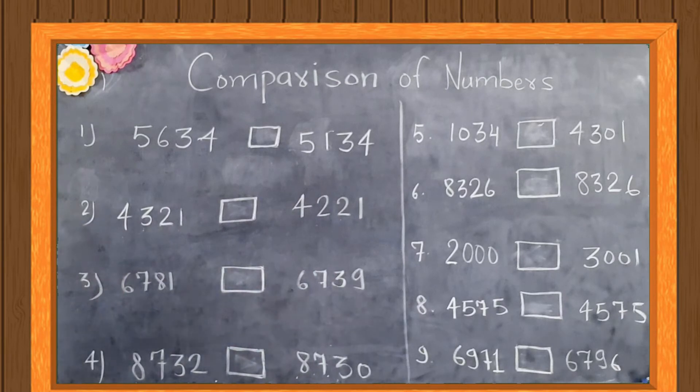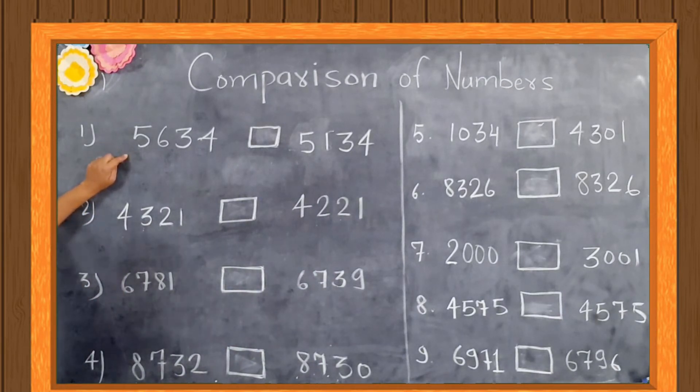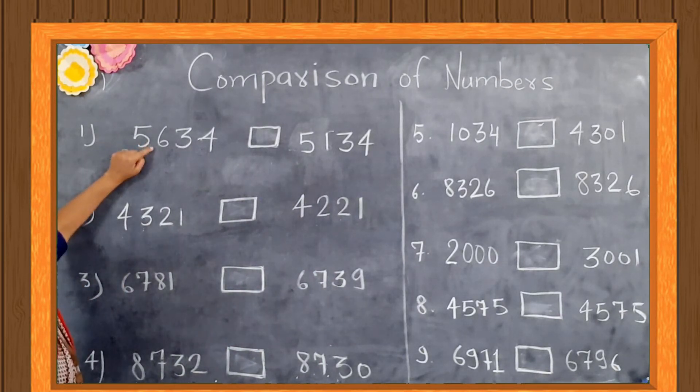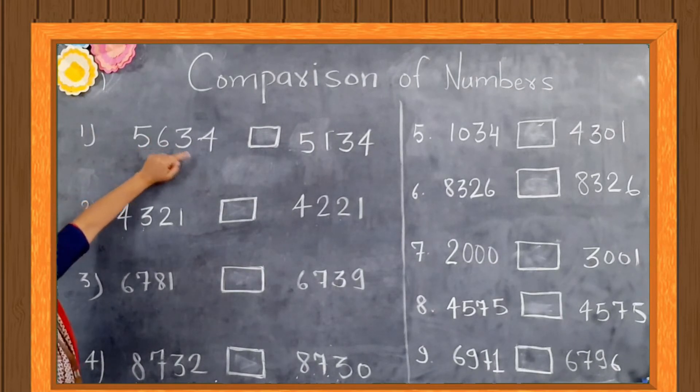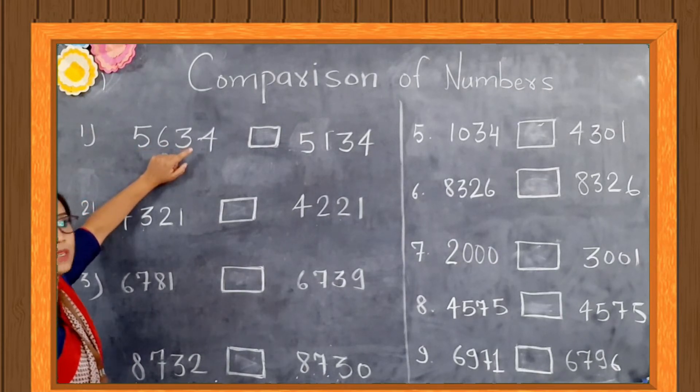We first look at the 1000 place, 100 place, 10 place, and 1 place.